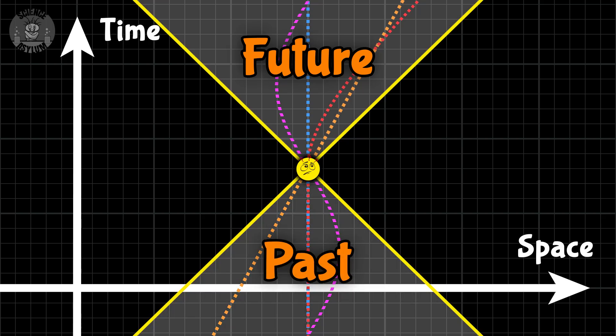Your entire life is contained inside these regions, no matter what you might have done or what you might decide to do. Those two regions are called your past and future light cones.